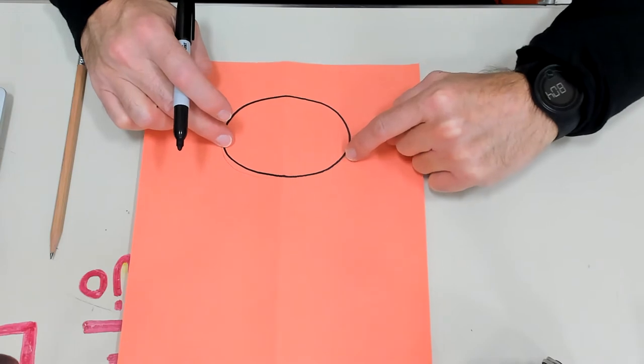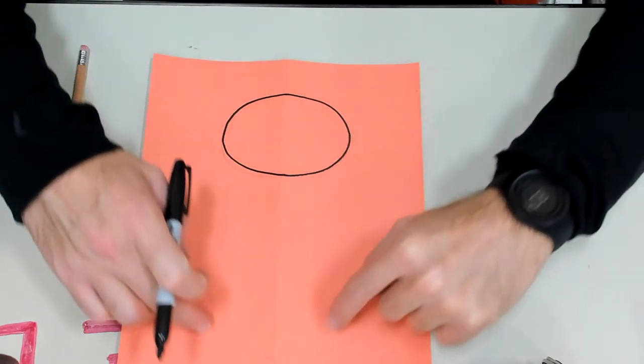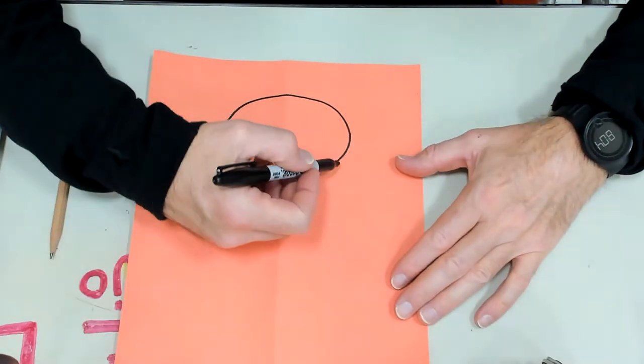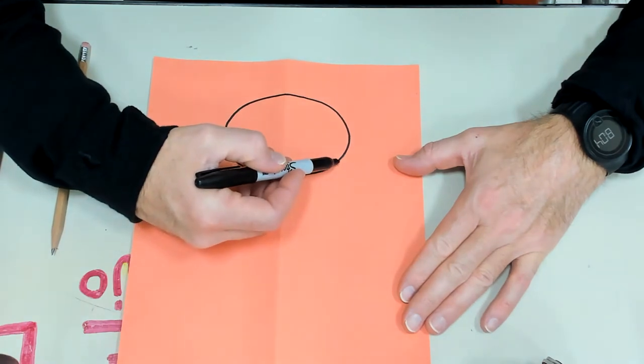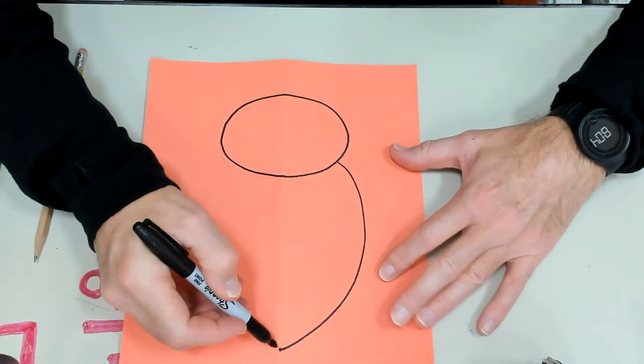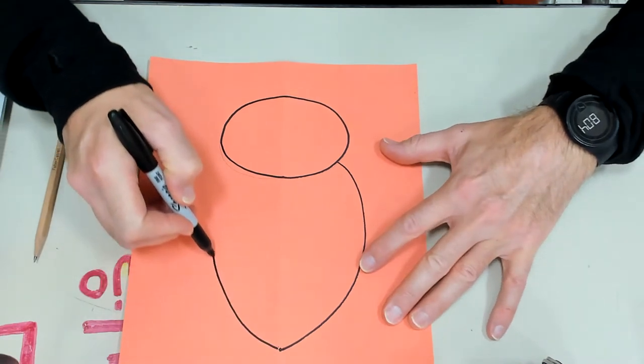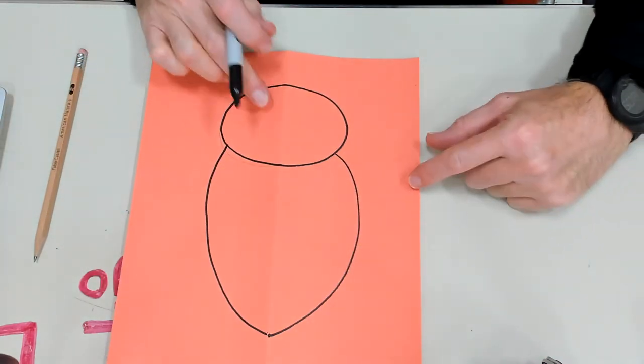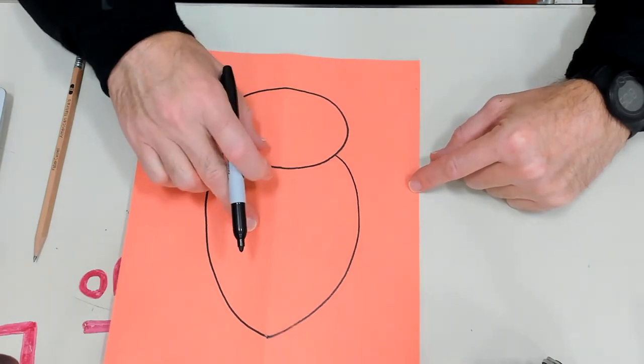Now I'm going to add what looks kind of like the body of a bee on the back of this. Nice and big, and then I'll try to match it as good as I can on this side. So this is my head. This is my body.